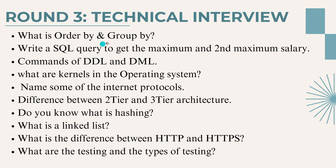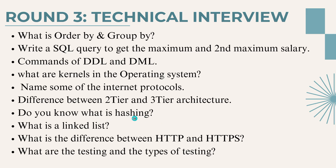What is ORDER BY and GROUP BY — comes under DBMS. Write an SQL query to get maximum and second maximum salary from a table. They will give a table of data and you should write a query to extract maximum and second maximum salary. Commands of DDL and DML, what are kernels in operating system, name some internet protocols, difference between two-tier and three-tier architecture. Do you know what hashing is? It is a good technique to solve coding problems with less time complexity. Learn about hashing and linked list — have at least basic knowledge on them.